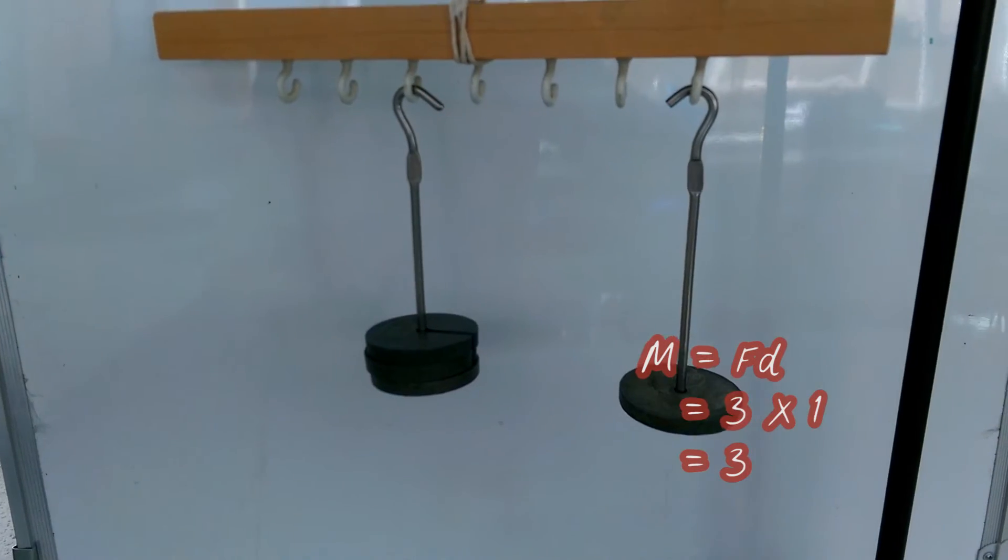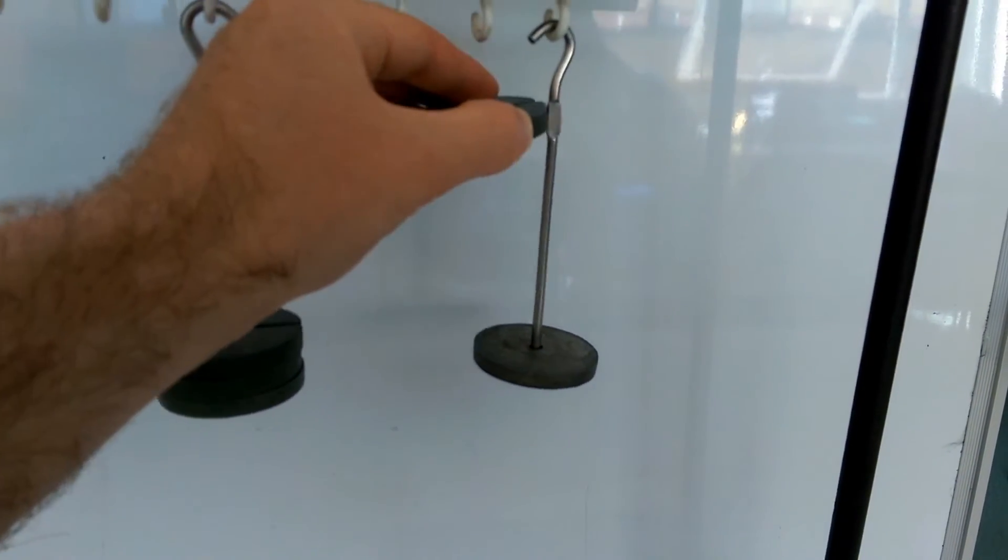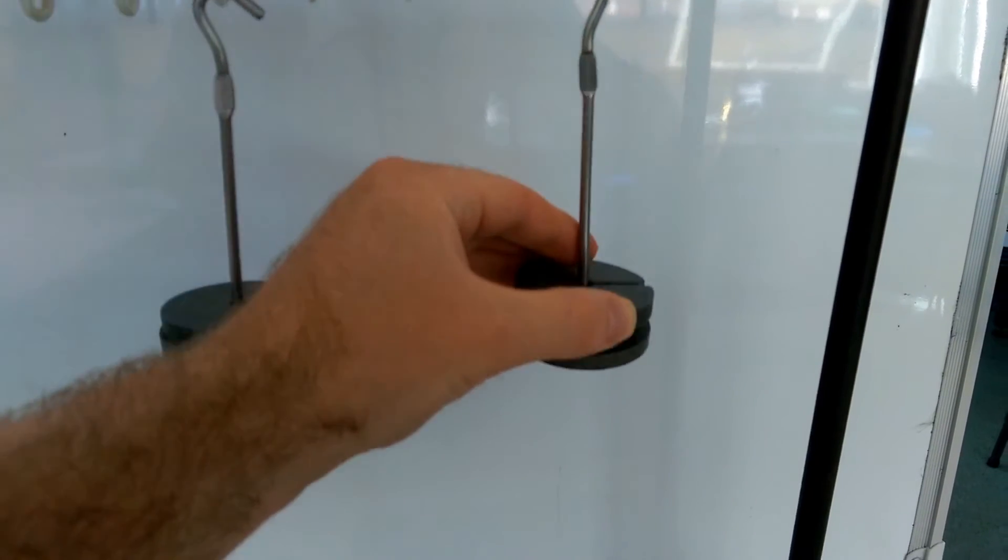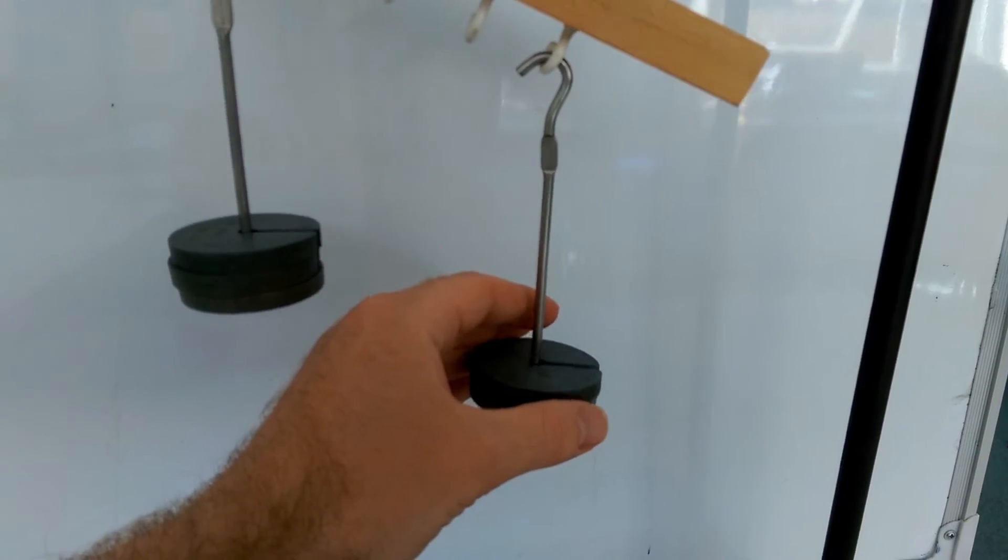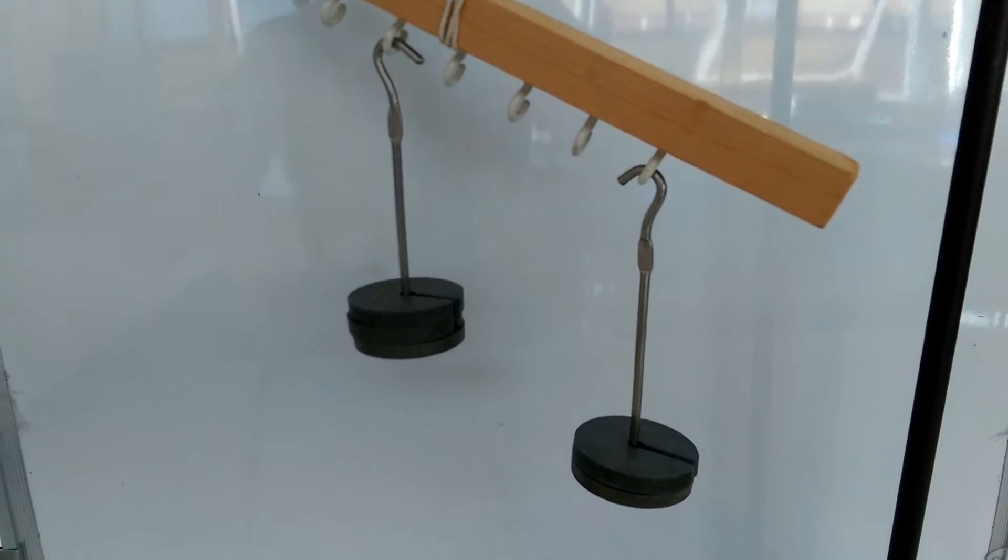Now if I unbalance this by adding one extra weight here, I now have a moment on this side of six. And so the moment on this side of three is not going to be enough.